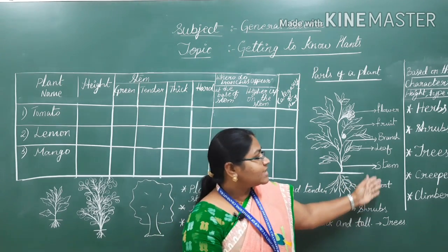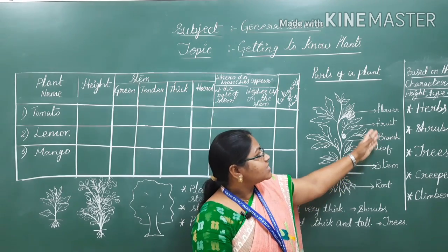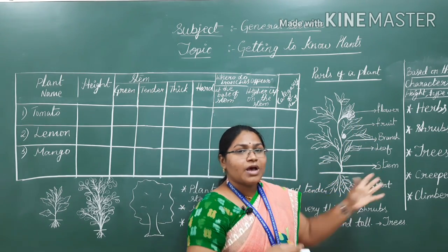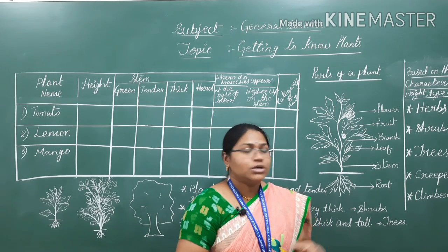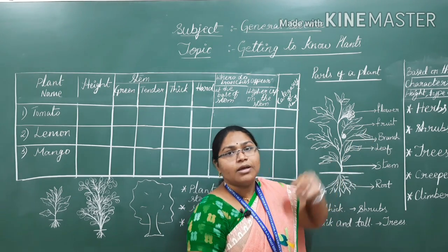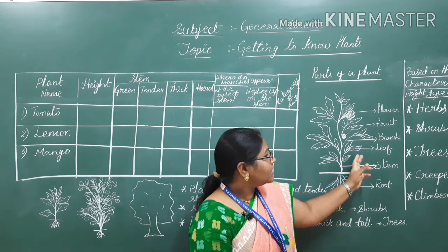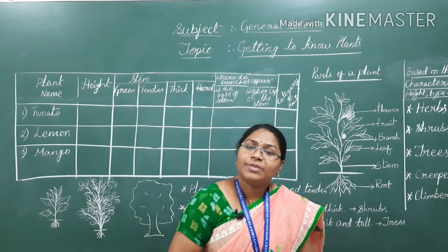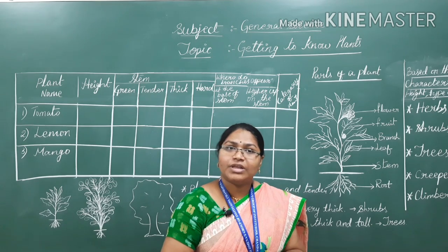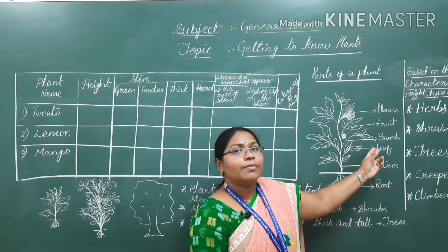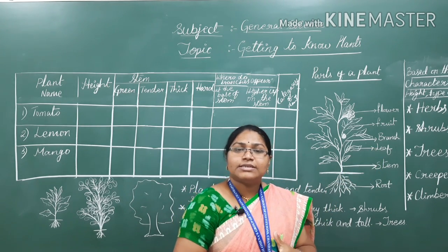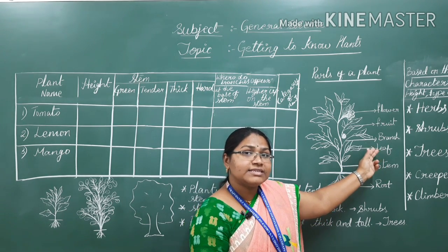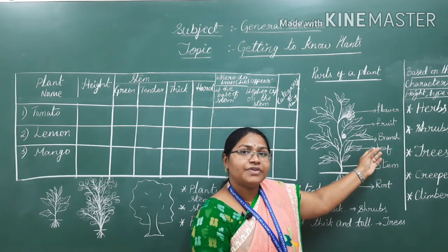The parts of a plant are: root, stem, leaf, branches, fruit, and flower. The stem processes and transports all minerals and water to each and every part of the plant body. The leaf contains a very important pigment called chlorophyll. With the help of chlorophyll, the plant can make its own food in the presence of sunlight. So the leaf is a very necessary and important part of a plant.